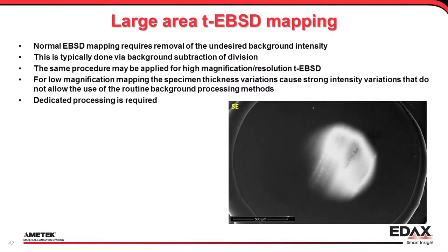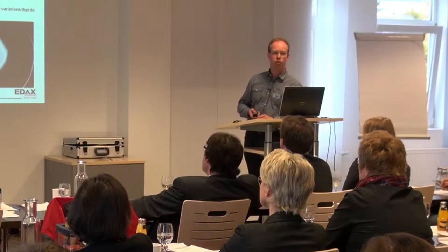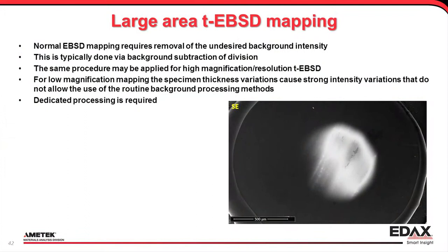As soon as you start looking at low-symmetry materials — my example here was olivine, which is orthorhombic — but it's already pretty bad if you're looking at magnesium and titanium alloys, which are hexagonal. There are not that many zones that allow you to image all possible dislocations. Then it would be helpful if you know beforehand which grains are in tilting range. So that's what I wanted to do.